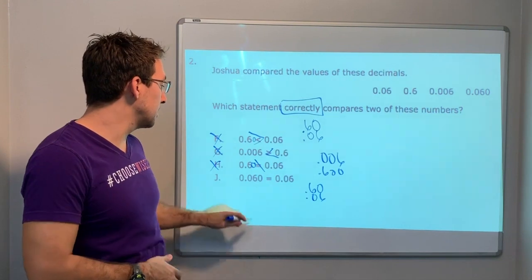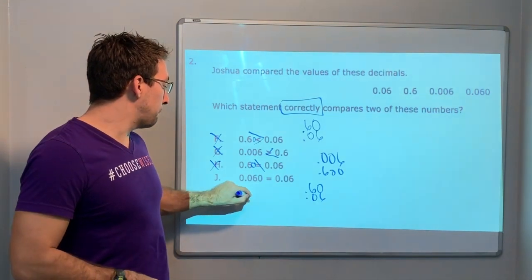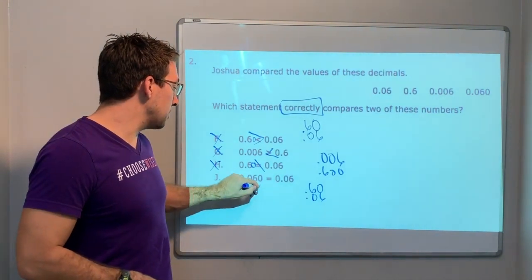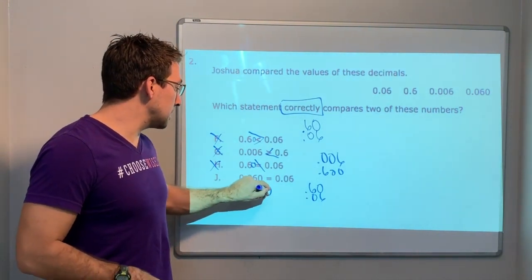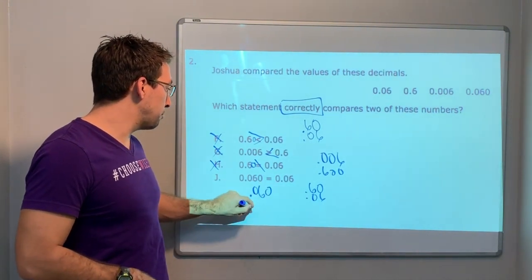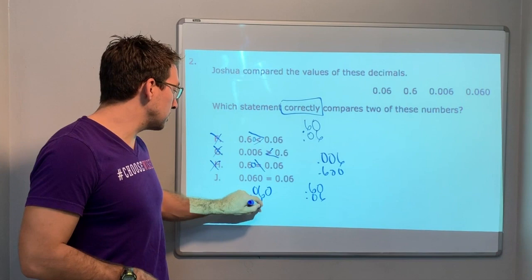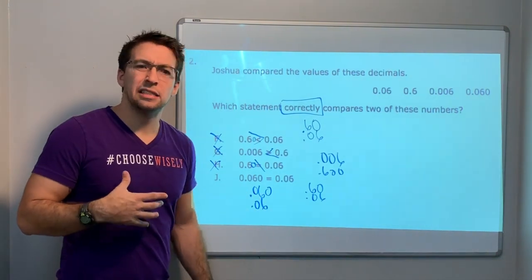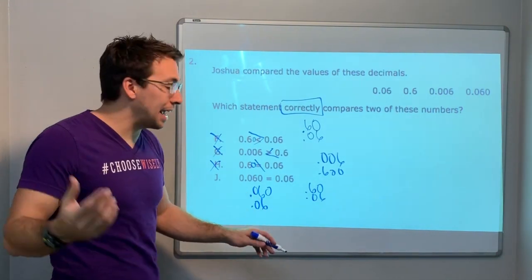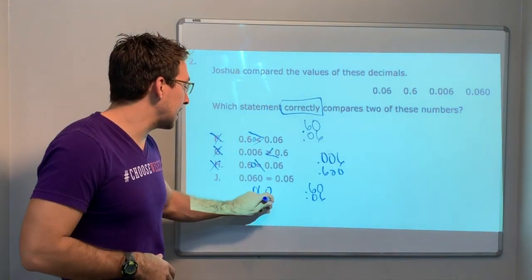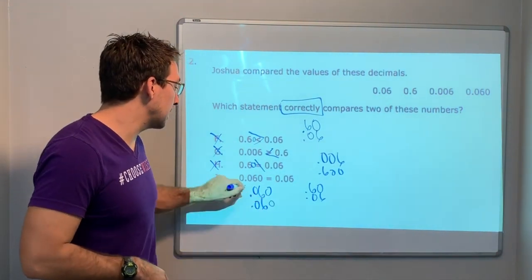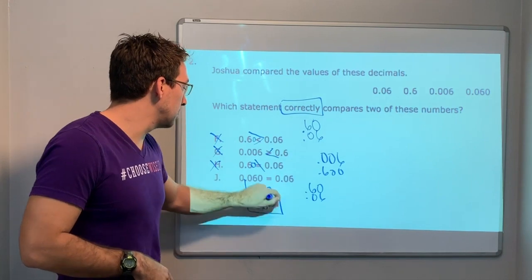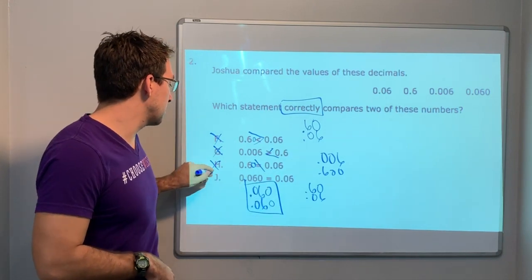J is correct: point zero six zero equals point zero six — you can add a zero at the end of a decimal and it remains equal. That is correct.